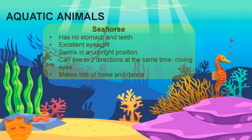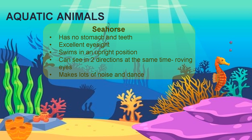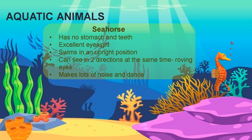It's a sea horse. It has no stomach and no teeth. It has excellent eyesight. It swims in an upright position. It can see in two directions — can you even imagine that? At the same time, one eye will be looking at some other place and the second eye would be looking at something different. They make a lot of noises and they dance also.